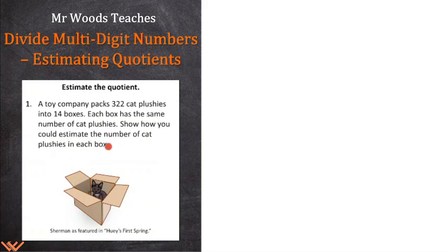Well, other words for our synonyms for estimate can be it's an approximation, or it's an educated guess. So when we say educated guess, we're going to use our number sense to do that. Here's a cat plushie here, and that's Sherman as featured in Huey's First Spring. That's in one of my books that I've written. Let's go back and reread it. A toy company packs 322 cat plushies, so I'm going to underline that, into 14 boxes. It says each box has the same number of cat plushies. Show how you can estimate the number of cat plushies in each box. It's not asking for the exact number, but we want to get an estimation.